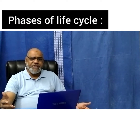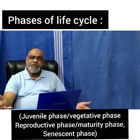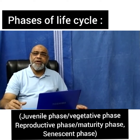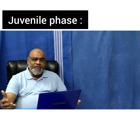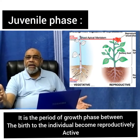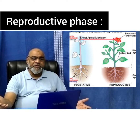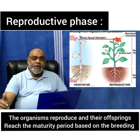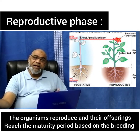Now let us see the different phases of a life cycle. Organisms have three phases: the juvenile phase or vegetative phase, the reproductive phase or maturity phase, and the senescent phase. In the juvenile phase, it is the period of growth from birth until the individual becomes reproductively active. In the reproductive phase, organisms reproduce and produce offspring.